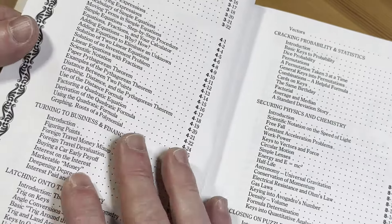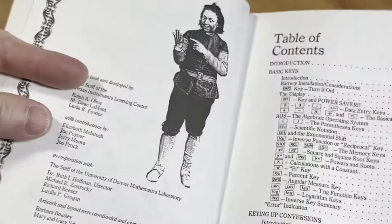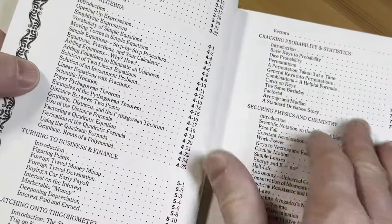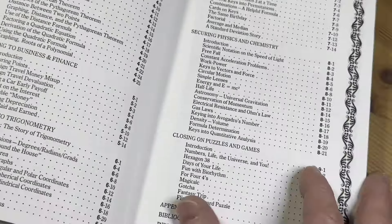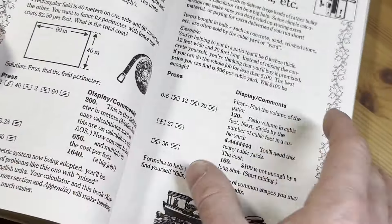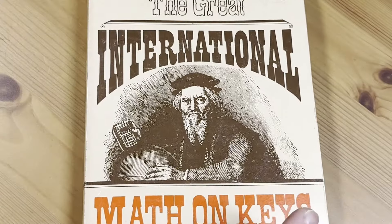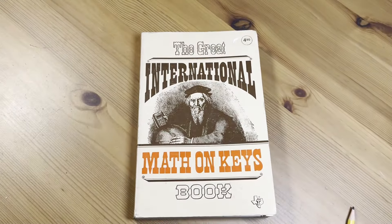You've got algebra, business and finance, trig, probability and statistics, physics and chemistry, puzzles and games. So you've got quite a few topics that you can work through. Kind of a cool book. The Great International Math on Keys Book. Take care.